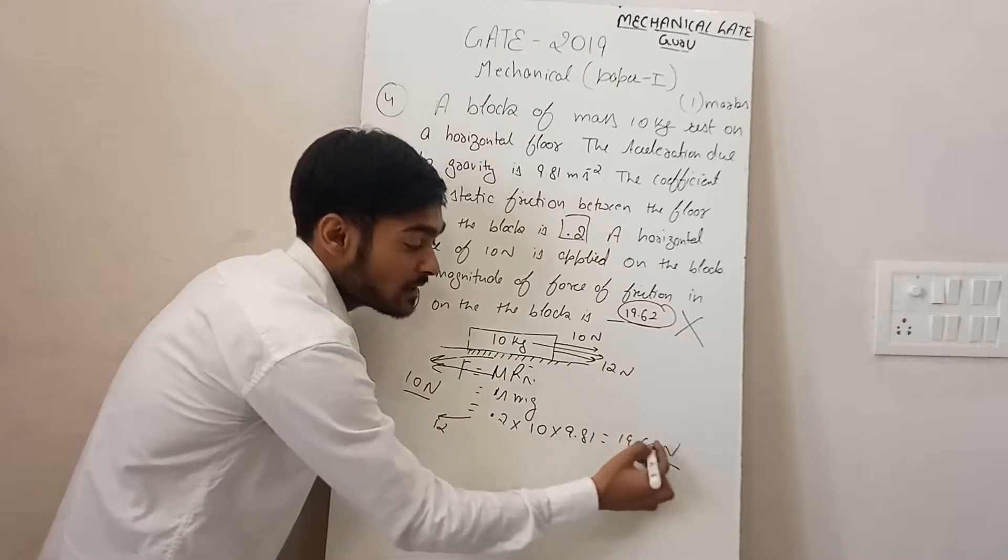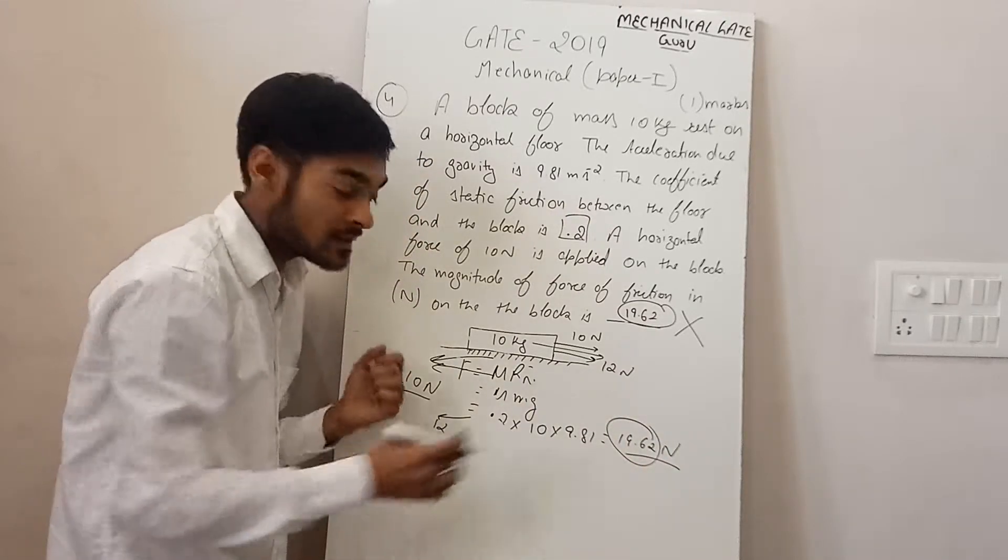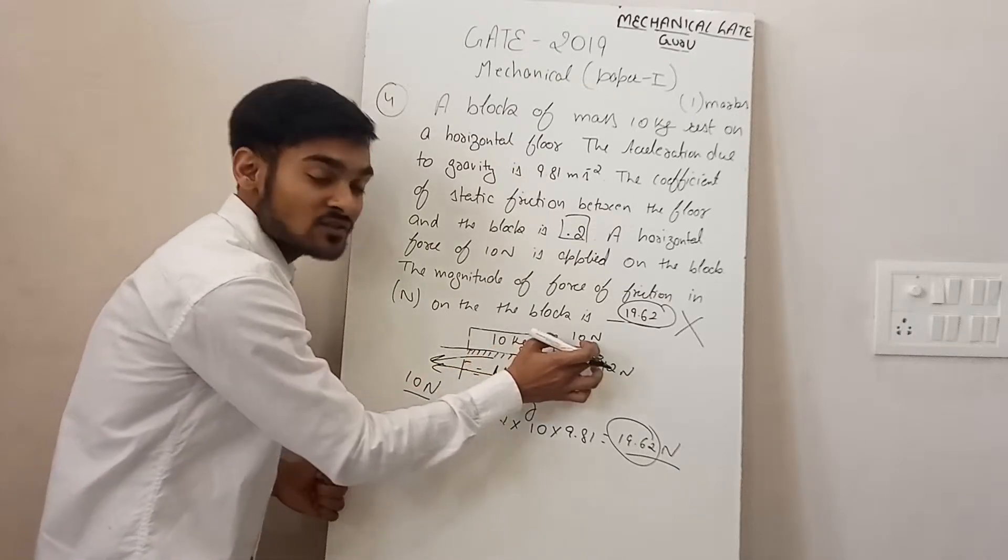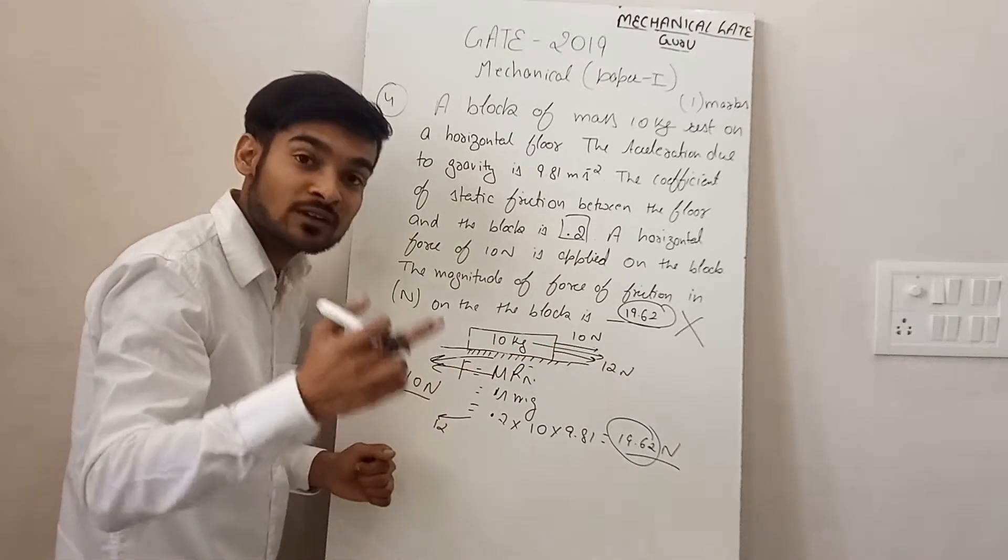Because friction is maximum 19.62, but it will not exceed that. So, if you have 10 N applied force, then friction will be 10 N.